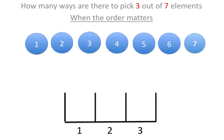So it's really very much a repetition of what we did for the factorial. For the first one, we have seven possibilities.